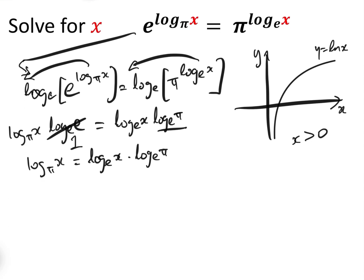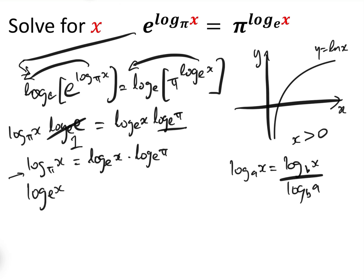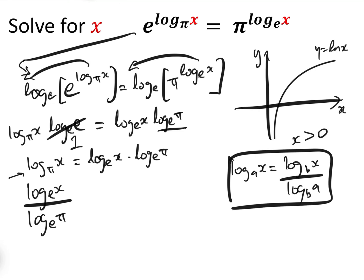To solve this we need to get the bases the same. We're going to use the change of base formula: log_a(x) equals log_b(x) over log_b(a). Changing base pi to base e gives log_pi(x) equals log_e(x) over log_e(pi).